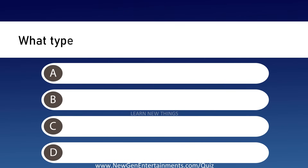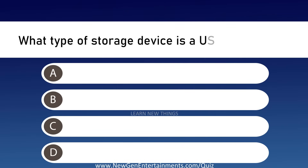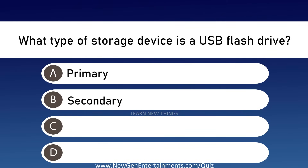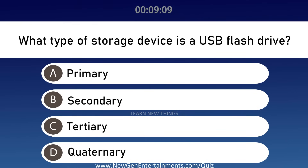What type of storage device is a USB flash drive? Options are A: Primary, B: Secondary, C: Tertiary, and D: Quaternary. Answer is Option B, Secondary.